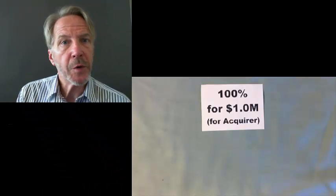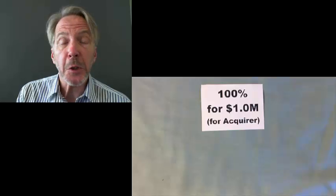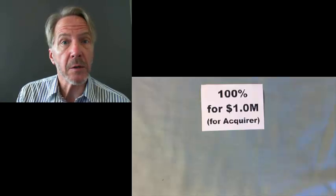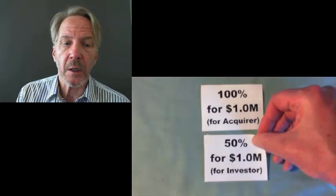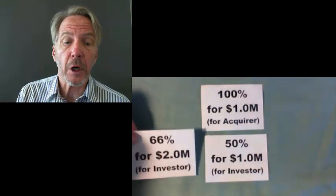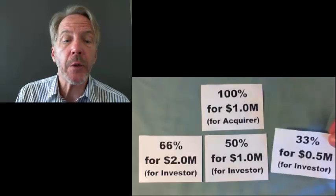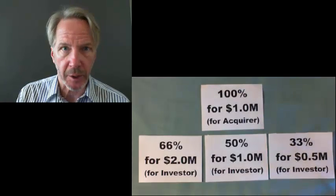Valuation is not so obvious when a fractional amount, less than 100%, is available for sale. Investors have to calculate valuation differently than an acquirer. For example, to an investor, the valuation of a company is $1 million if 50% is offered for $1 million, 66% is offered for $2 million, or 33% is offered for $1.5 million. I will show you how to make sense of this and how to calculate valuation from an investor's perspective.